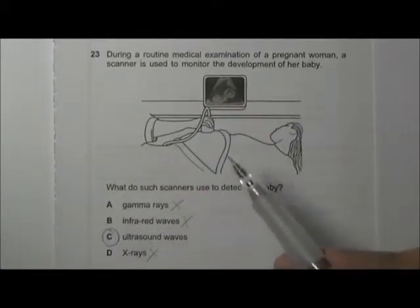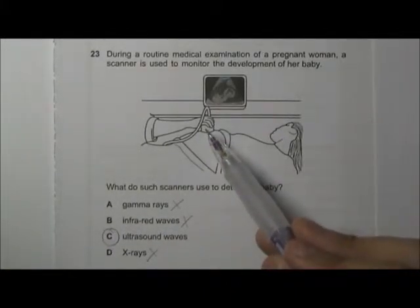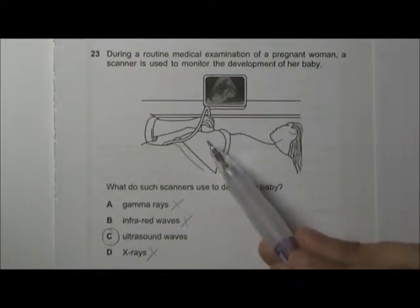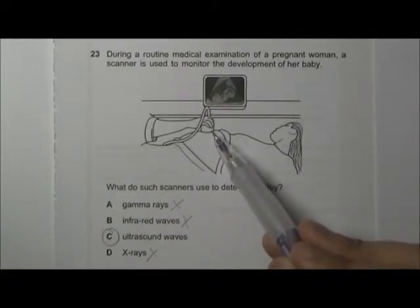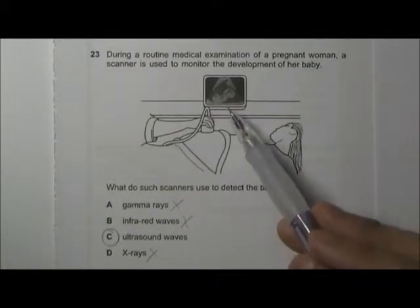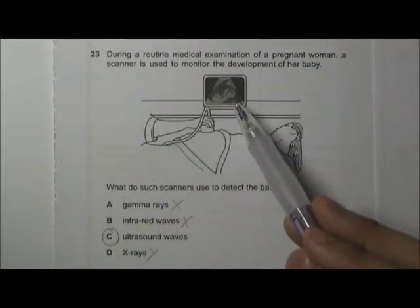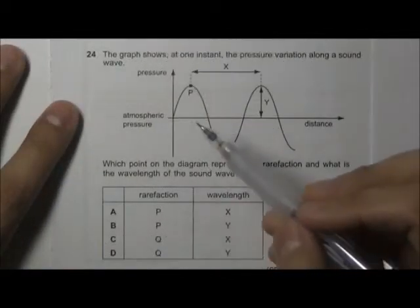Ultrasound wave is sent into the womb of the woman and reflects off the fetus. And there's a receiver here that will catch the reflected signal and it can form the image of the fetus here.